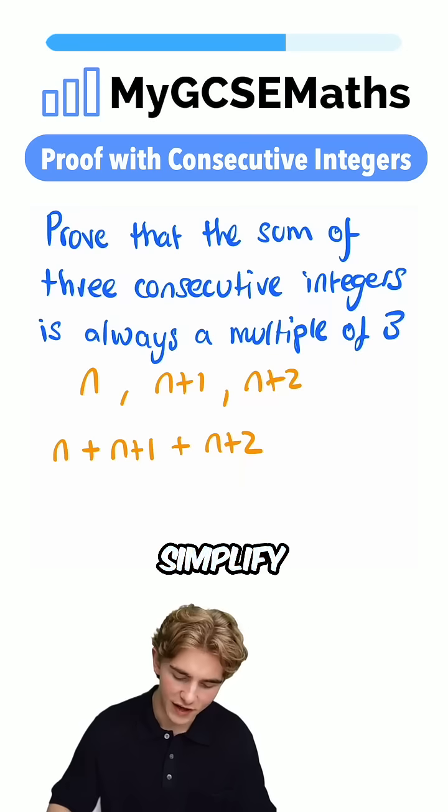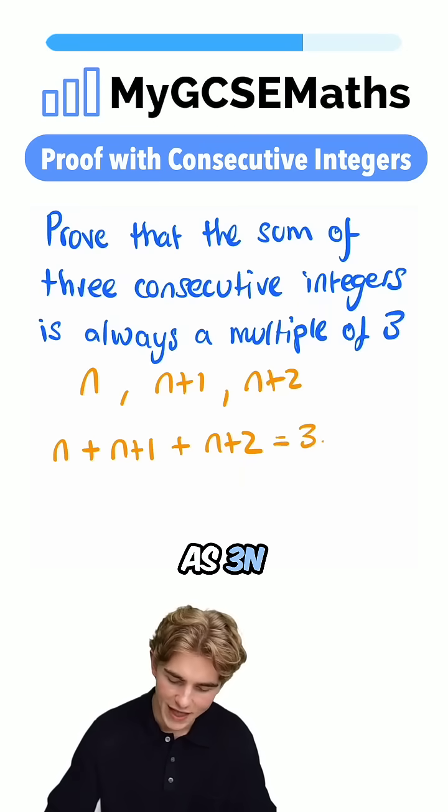Now, how can we simplify this? If we collect our like terms, we can write this as three n plus three.